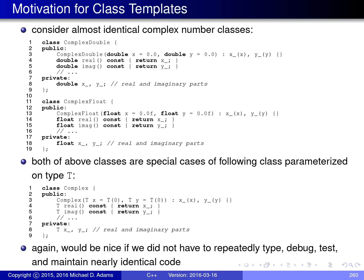Suppose we have some application where we need to represent complex numbers, so we develop a complex number class. The data members, called x underscore and y underscore, are used to represent the real and imaginary parts of the complex number, and we choose to use the double type for representing them. We write the rest of the class: a constructor which takes the real and imaginary part as parameters with defaults of zero, making it a default constructor, plus functions to get the real part and imaginary part, and many other lines of code providing additional functionality.